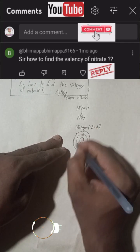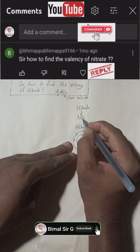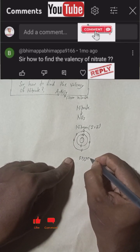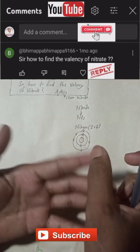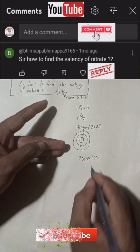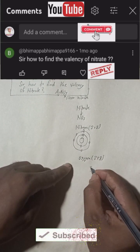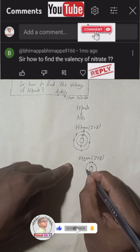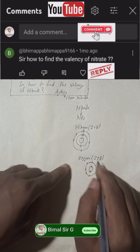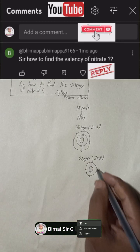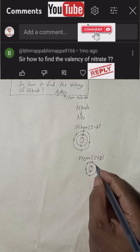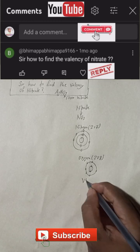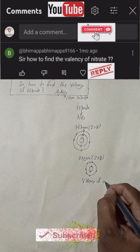There is also oxygen in the formula. The atomic number of oxygen is 8 — hydrogen, helium, lithium, beryllium, boron, carbon, nitrogen, oxygen — that is eight. In the first orbit there are 2 electrons, and in the second orbit there are 6 electrons — total 8. The outer shell has 6 electrons, so oxygen will try to gain 2 electrons. The valency of oxygen is therefore minus 2.